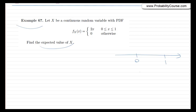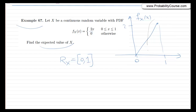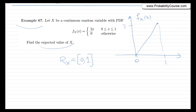The pdf is only non-zero from 0 to 1. In other words, the range of this random variable is all real values from 0 to 1. The pdf is given by the function 2x, so it goes from 0 to 2. Looking at this, we see the pdf is larger close to 1 and smaller close to 0. What it means is that it is more likely to observe values of X closer to 1 rather than close to 0, because the density of probability is higher around 1. I suggest that you find the expected value of X before watching the rest of this video.